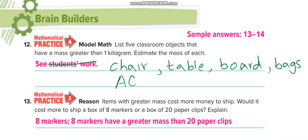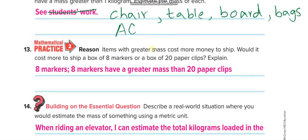Items with greater mass cost more money to ship. To ship means to send from one place to another. So would it cost more to ship a box of eight markers or a box of 20 paper clips? The number of items are more here, 20, but the paper clip is very light, just like one gram maybe. Eight markers, marker maybe one marker, maybe 20 grams. Even one marker maybe heavier than all of them. So of course, when the weight of markers is more, it will cost more. So eight markers have a greater mass than 20 paper clips.